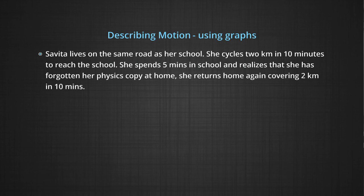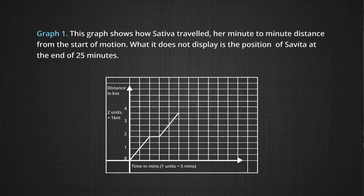Savita lives on the same road as her school. She cycles 2 kilometers in 10 minutes to reach the school. She spends 5 minutes in school and realizes that she has forgotten her physics copy at home. She returns home again covering 2 kilometers in 10 minutes. Now let us use a graph to show her motion. When we graph distance-time or position-time, on the x-axis we keep time because time is not dependent upon the distance. Therefore we keep the quantity which is independent on the x-axis. So our xt graph means position-time or distance-time graph.